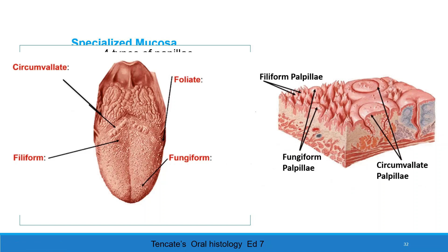Fungiform papillae are single papillae scattered between the filiform papillae at the tip of the tongue. Filiform papillae cover the entire anterior surface of the tongue; they are cone-shaped, covered with thick keratinized mucosa, are abrasive in nature, and cause breaking of food opposing the palate. Foliate papillae are present on the lateral aspect of the tongue, and a few taste buds are present. Circumvallate papillae are 8 to 12 papillae present in front of the sulcus terminalis, with a deep circular groove into which minor salivary glands open. The lateral wall is non-keratinized and may contain taste buds.